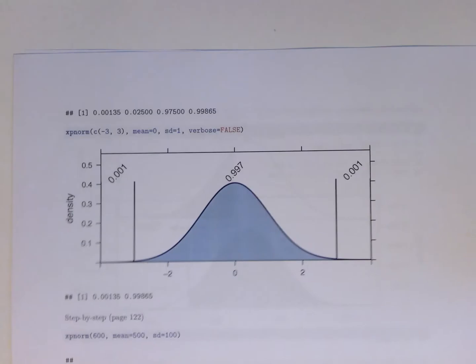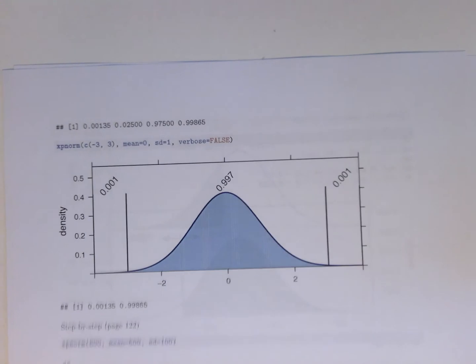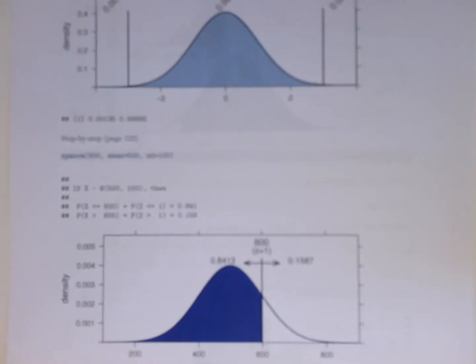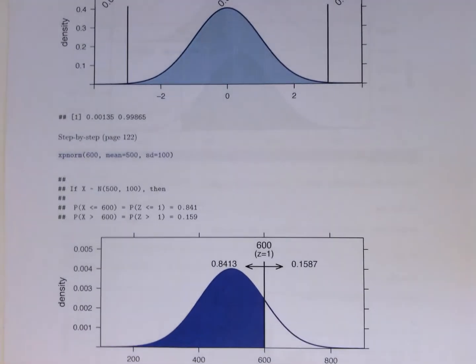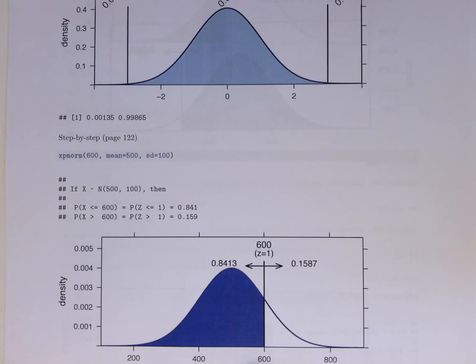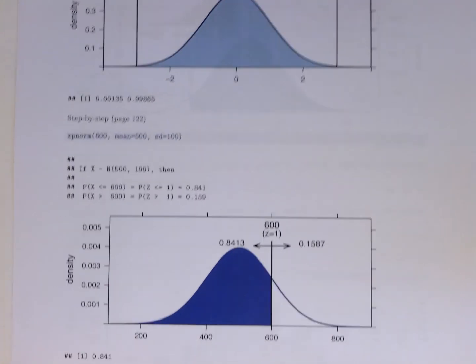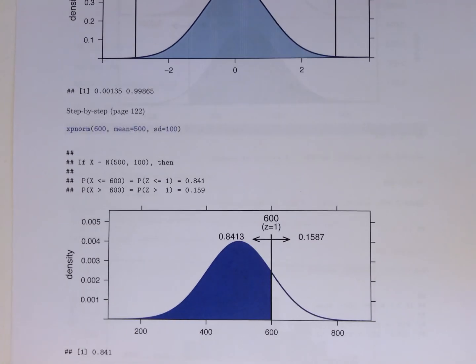If we have just a single value, that's going to be the most common. We can replicate the example in the step-by-step on page 122 and calculate here the probability that the value taken from the distribution is less than or equal to 600.